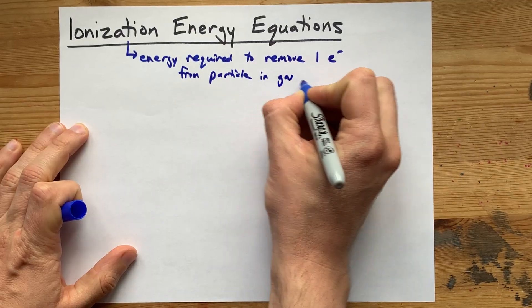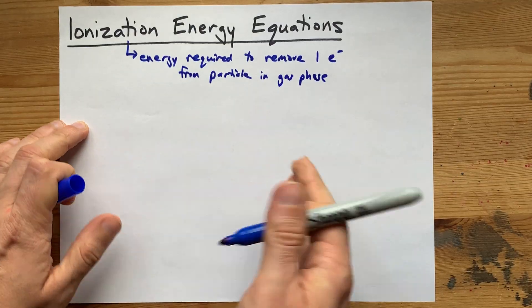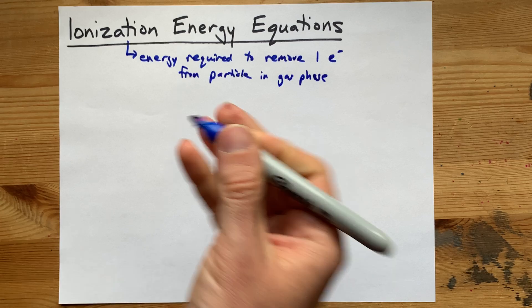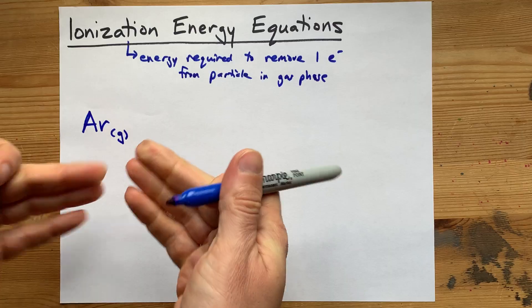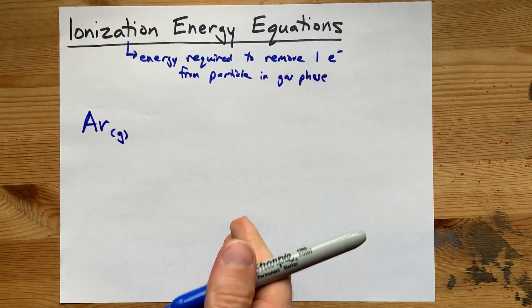Now, the in the gas phase portion of that is going to play a role in the states that I write. You can pick any atom you want for this. I'm going to pick something like argon, which is a noble gas and doesn't want to give up its electrons. But I'm going to force it.